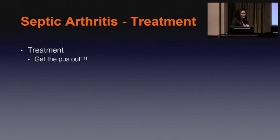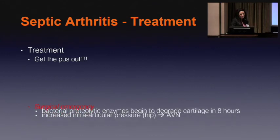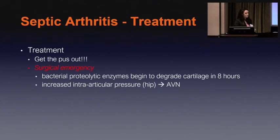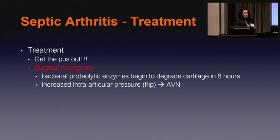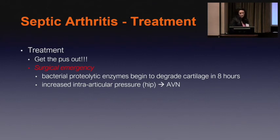The treatment is really to get the pus out — that's number one. The reason this is a surgical emergency is because within about eight hours, the bacteria and the enzymes they produce will start to degrade the cartilage. And if you think about that eight hours, it starts from when the parents decided it was bad enough to contact someone. By the time they register, get blood drawn, wait for results from the lab — the clock is ticking throughout this entire time. It is a true surgical emergency.